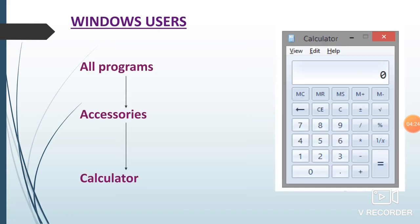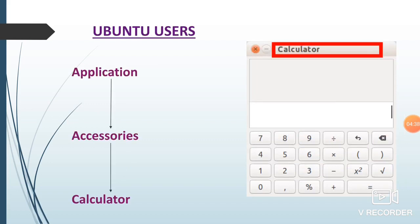For Windows users, you have to click on All Programs, Accessories, then Calculator. Otherwise you can click on the search bar and type 'calculator' to use it. For Ubuntu users, you have to click on the Calculator app. Both calculators will be the same for Windows and Ubuntu. So we have seen two computer tools — on-screen keyboard and calculator — and how to use them.